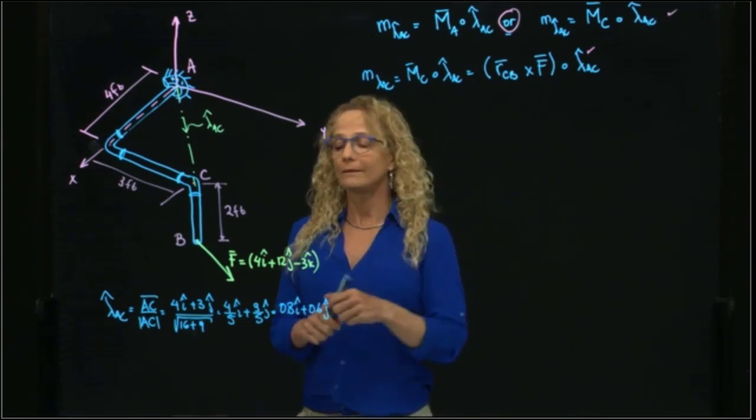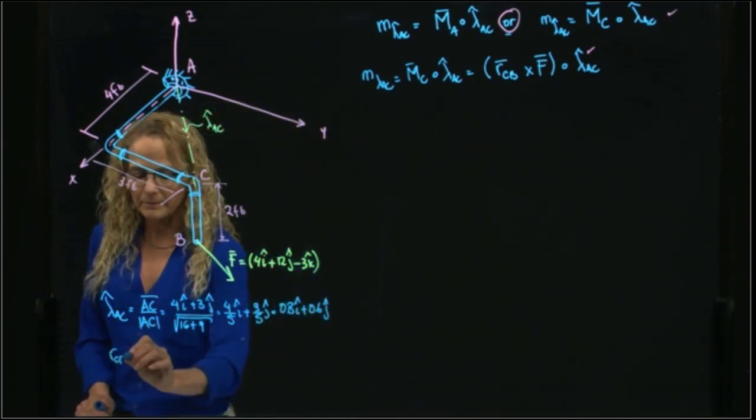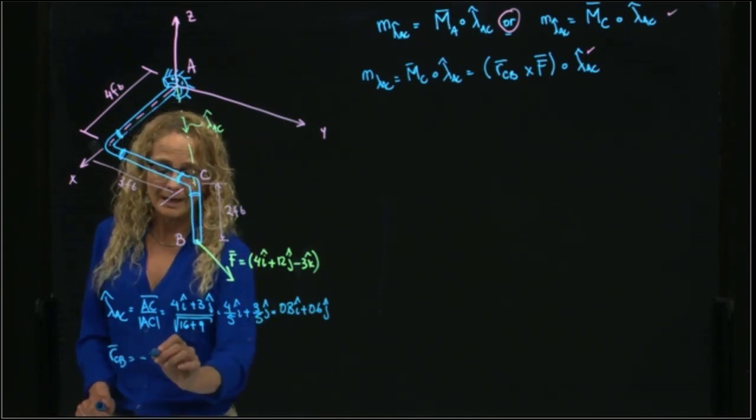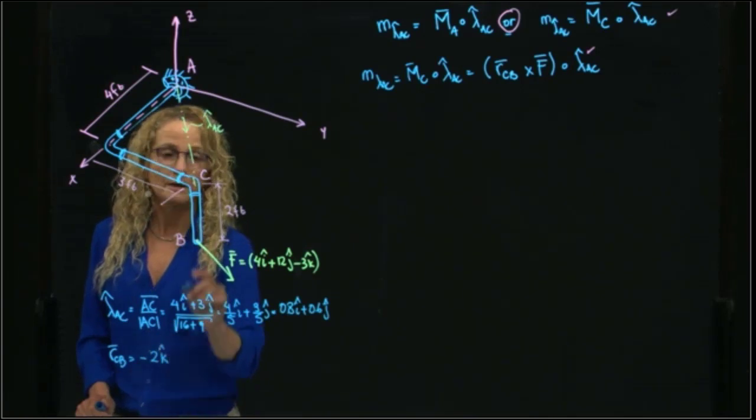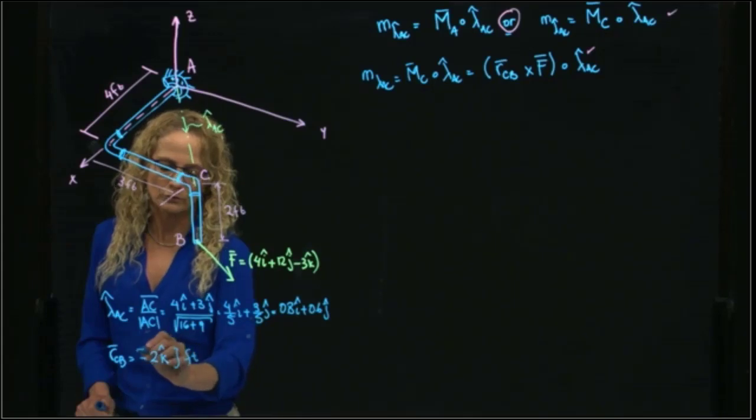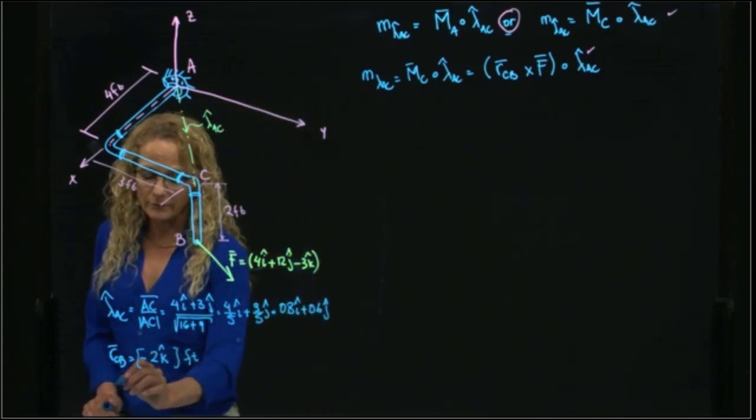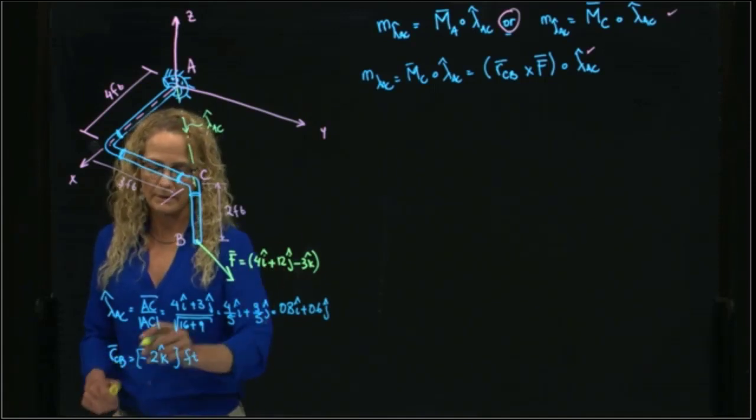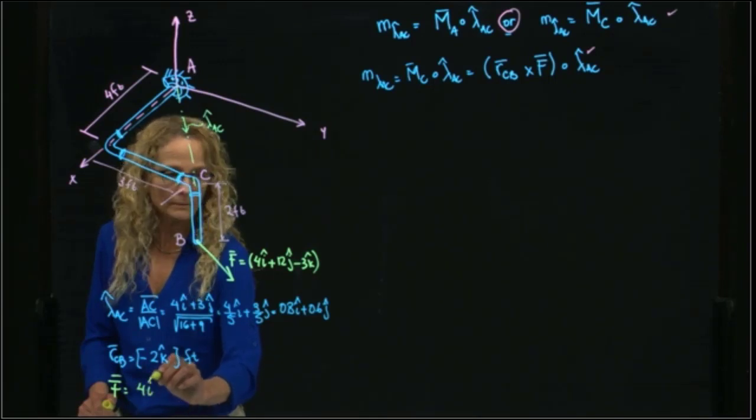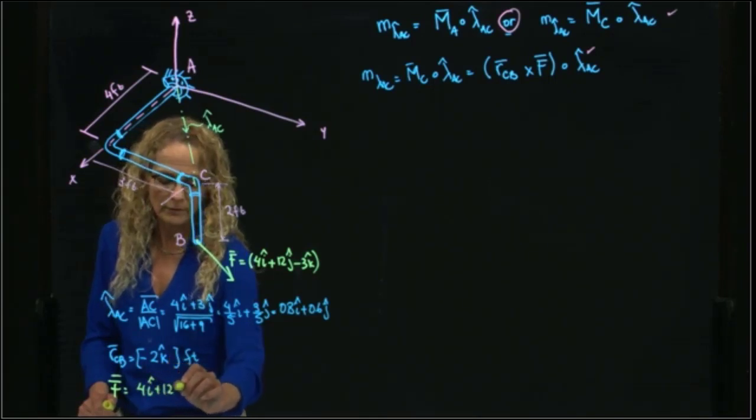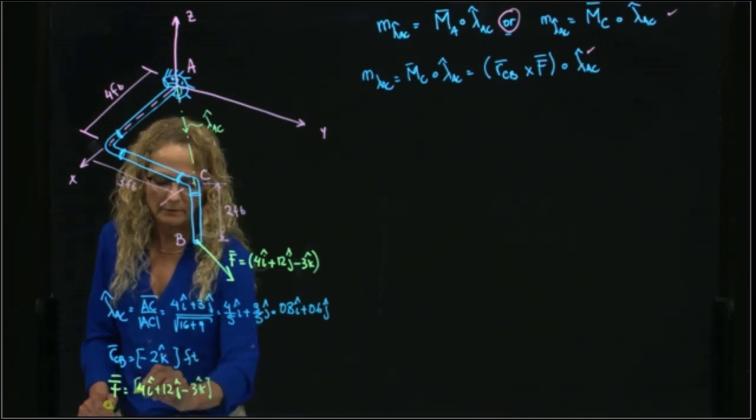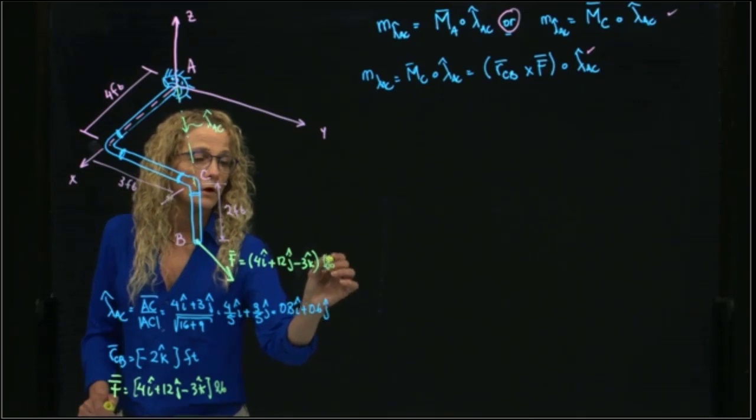I also need RCB, which is this vector over here, which is negative 2k in feet. I always have to use the proper units. And the vector F, which we already know is 4i plus 12j minus 3k, and this vector is given in pounds.